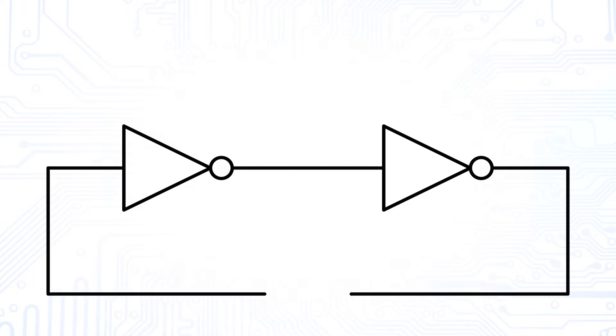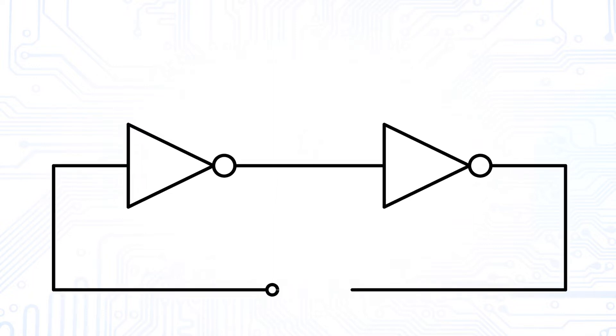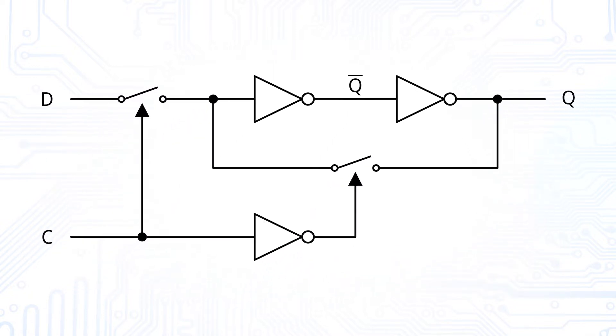Again, we have two inverters that we can put into a loop and two switches that are controlled by a clock C. If C is high, we feed the input D to the output Q.